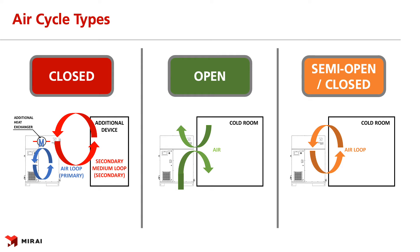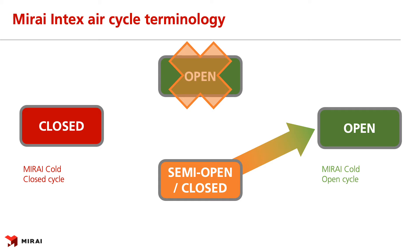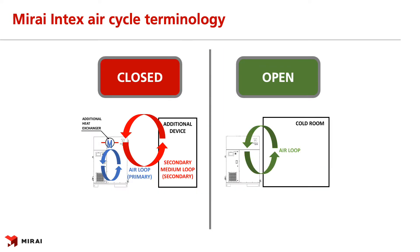Here are very simple schematics to even better understand the air cycle types. At Mirai, we use the terminology a little bit differently. Closed cycle at Mirai is the same as described before, but the open cycle Mirai machines are in fact working on the semi-open/closed principle, but are called open cycle machines — simply because the actual open cycle described before is not efficient and the terminology of 'open cycle' is much better than 'semi-open/closed cycle.' With the same logic, here are the two working principles of Mirai cold machines: closed is identical, and open is the semi-open/closed cycle.